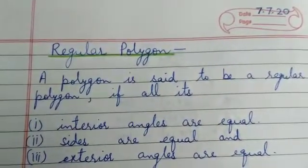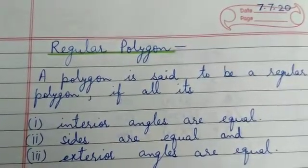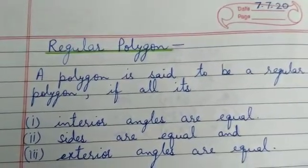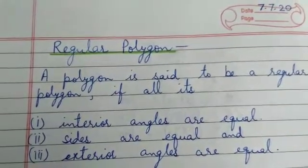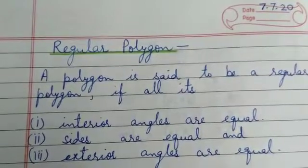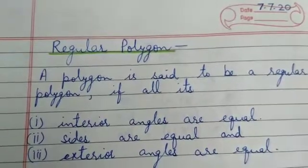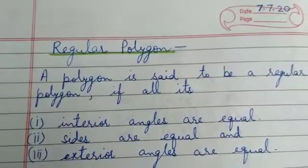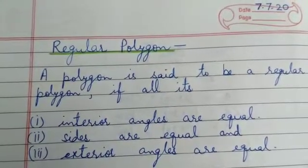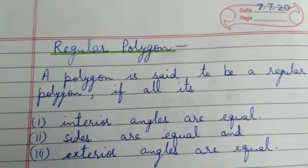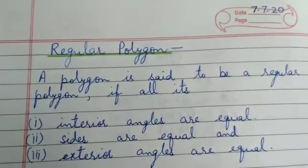For example, if there is a triangle where all three sides are equal, each interior angle is equal, and each exterior angle is equal, that triangle is called a regular triangle. An equilateral triangle is a regular triangle because in an equilateral triangle all three sides are equal and each angle is equal to 60 degrees.